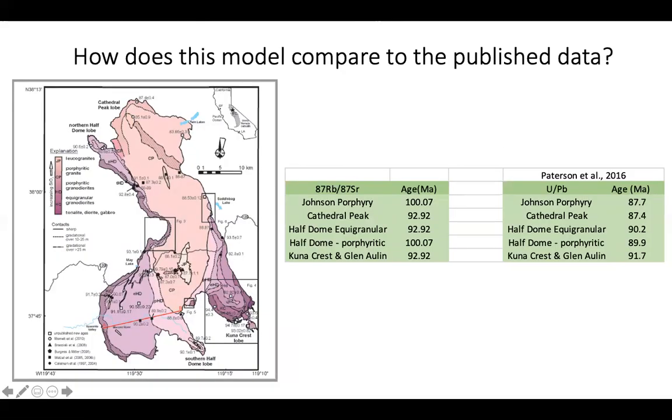So on the left side are the ages that I found using the rubidium strontium model, and they're different than the ages from the map, which is on the right side. In some cases, by many millions of years.